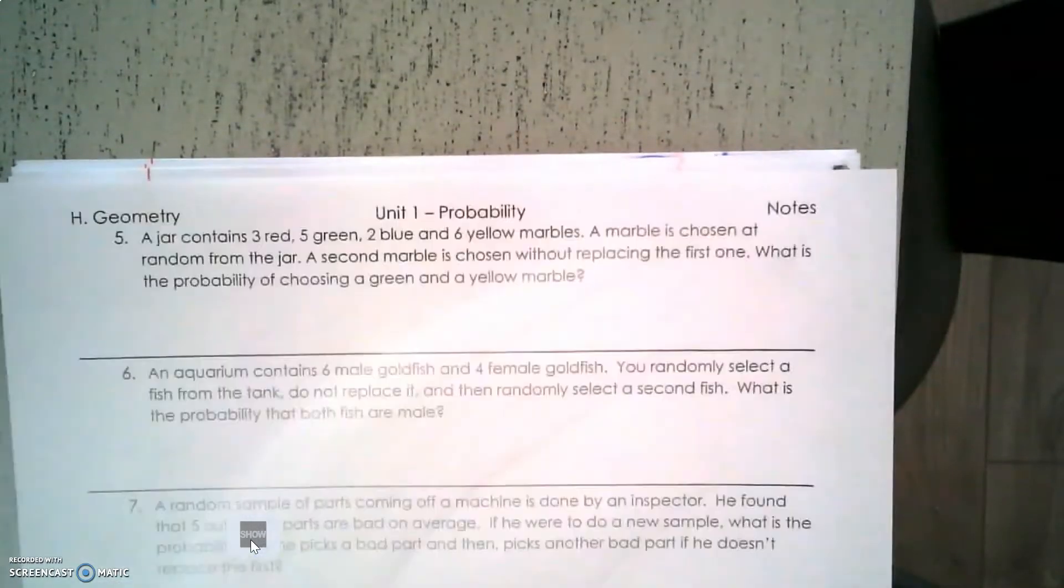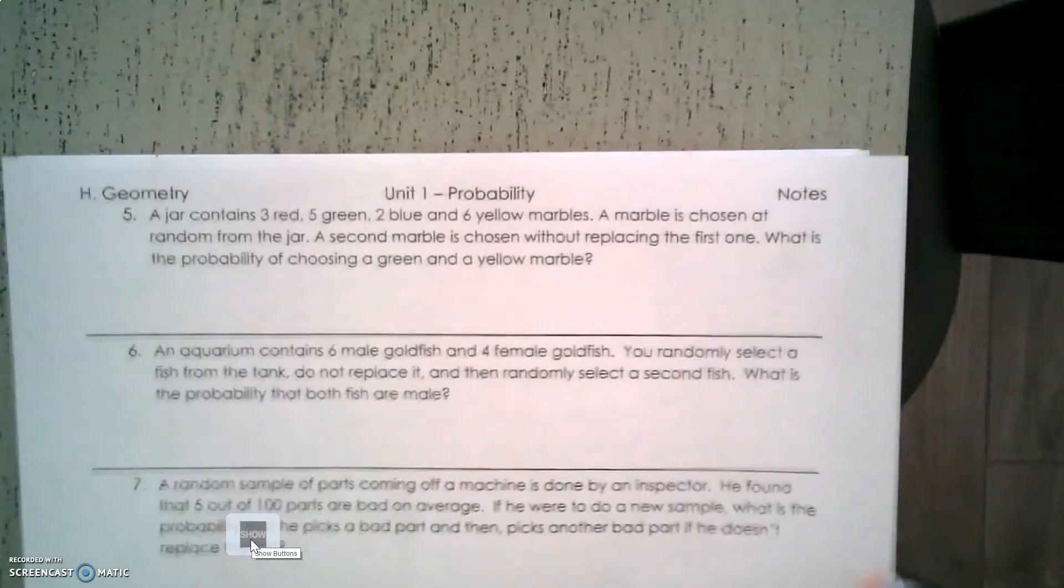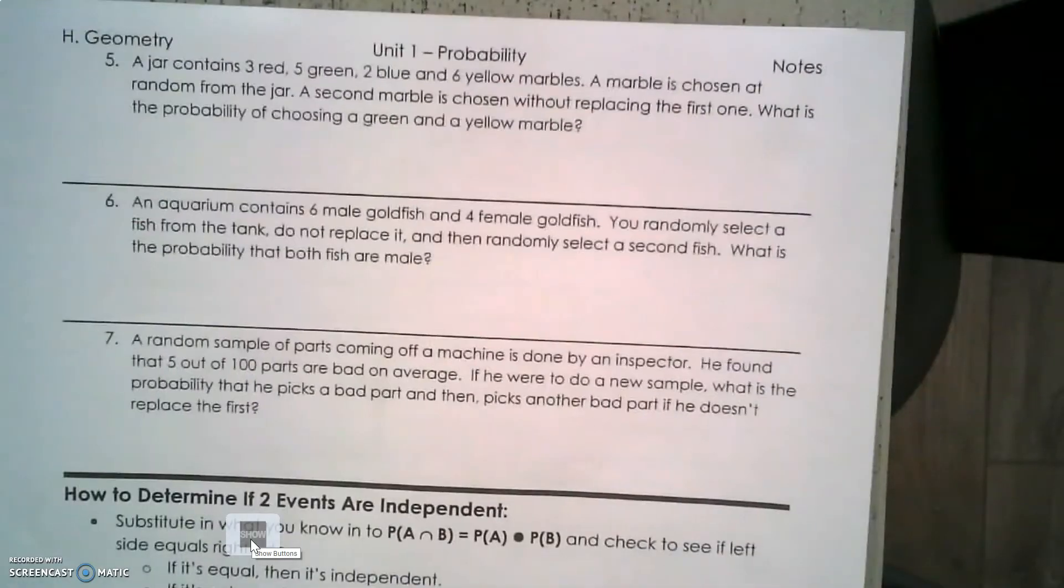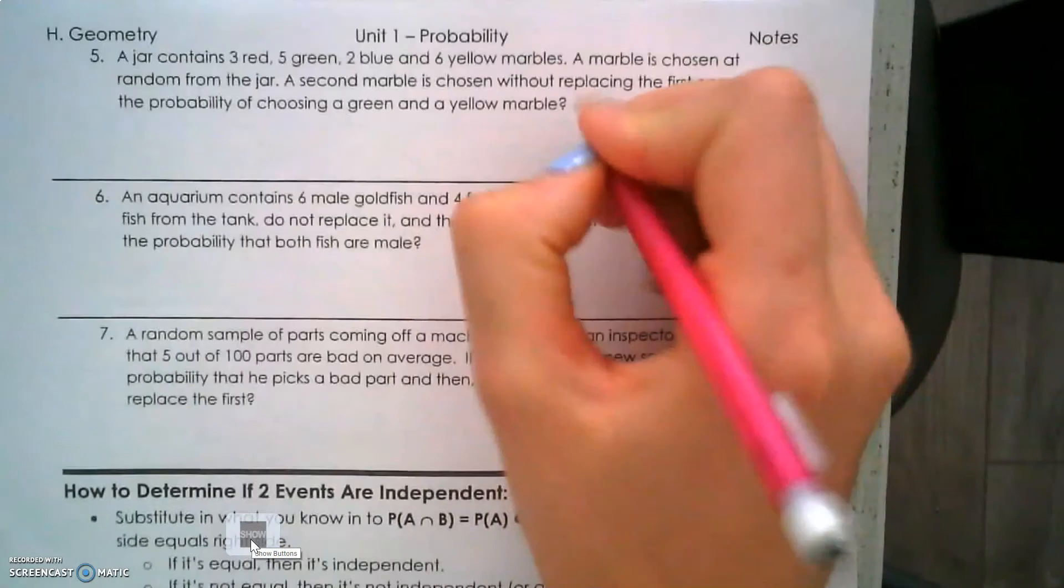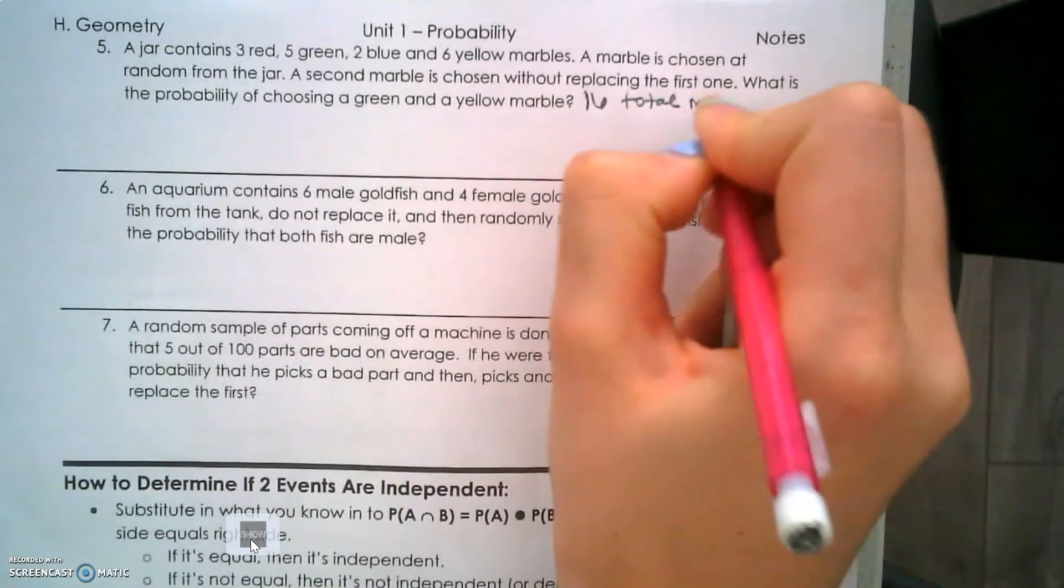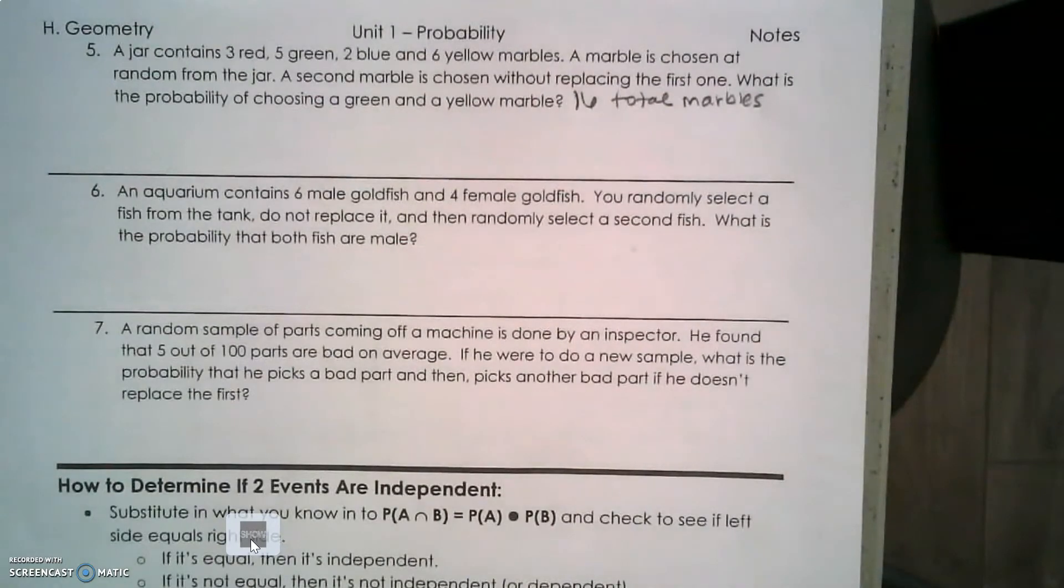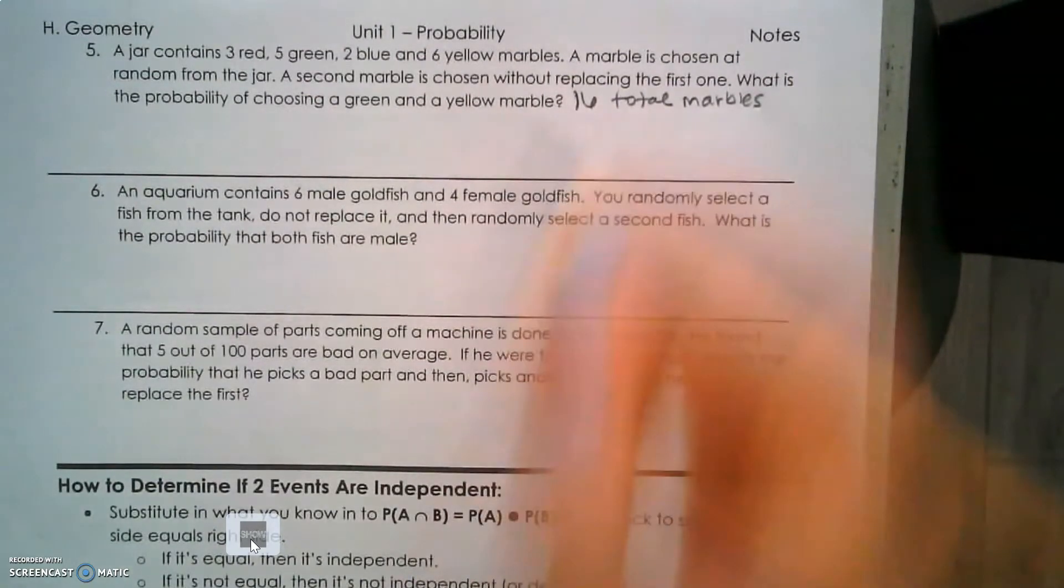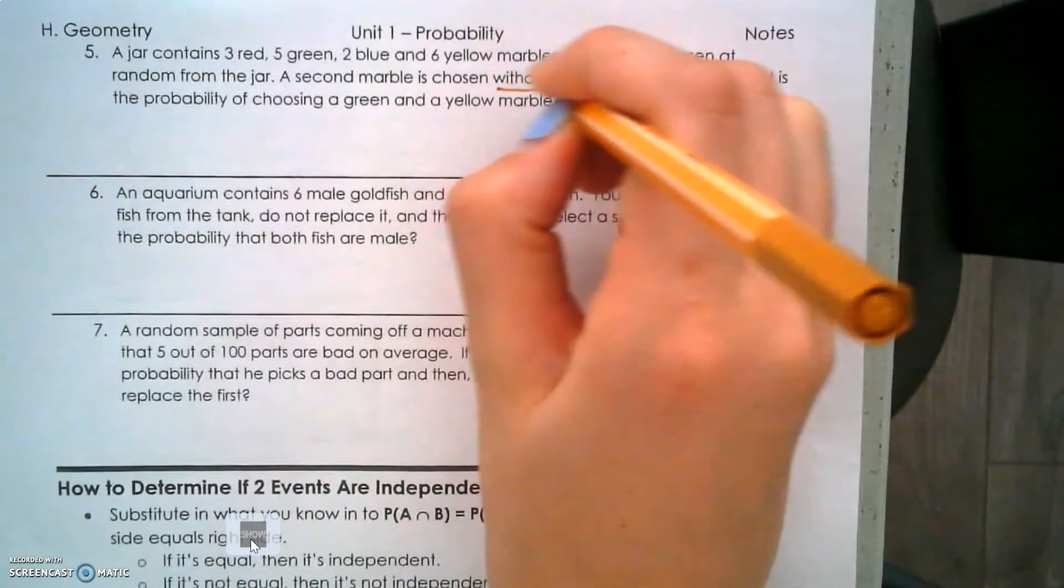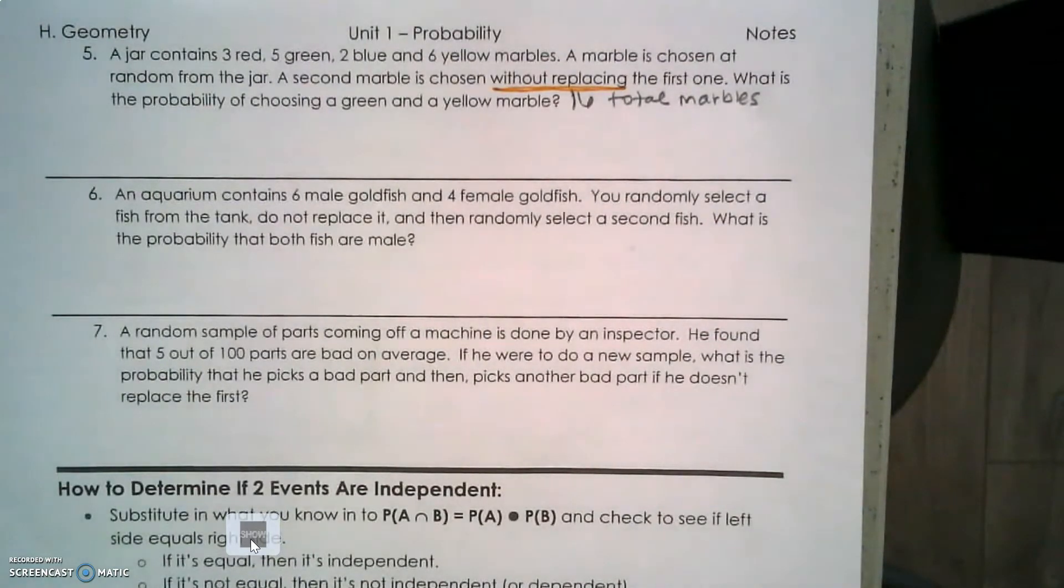A jar contains 3 red, 5 green, 2 blue, and 6 yellow marbles - there's 16 total marbles in our jar. A marble is chosen at random, then a second marble is chosen without replacing it. Again, that's the key word you have to look for - without replacing - this is dependent.